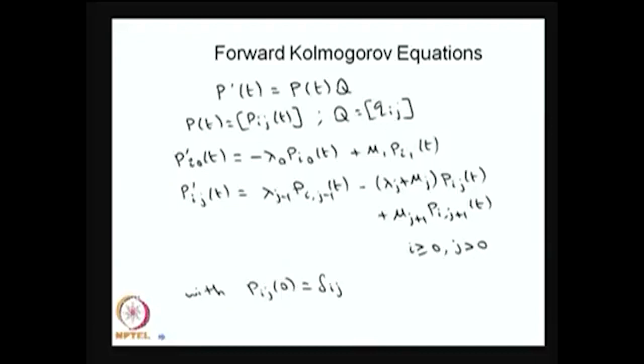We are discussing the forward Kolmogorov equation for a special case of continuous time Markov chain, that is the birth-death process. For a birth-death process, the Q matrix is a tridiagonal matrix. Therefore, from the forward Kolmogorov equation you will have only two terms on the right-hand side for the first equation, and only three terms — the diagonal element and two off-diagonal elements — for the others.